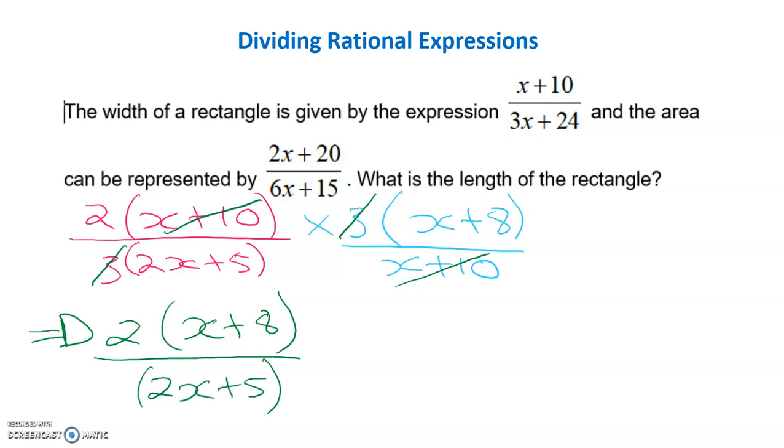Now we need to consider our restrictions, especially given that this is a contextual problem. It exists in reality. So we need to have a look at what x cannot equal. To do this, we need to look at our denominators, because our denominator can't be 0. Now this is where some people get tricked when we're doing division, because this term here was actually this one. So this is the original denominator, and that's what we need to look at.